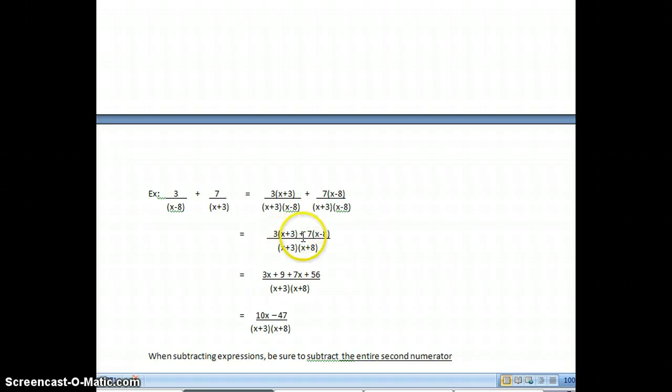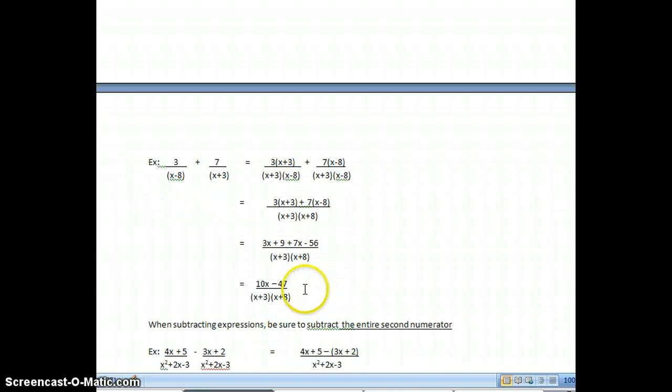And I have 3 times x plus 3 plus 7 times x minus 8. Now I'll distribute: 3 times x is 3x, 3 times 3 is 9, 7 times x is 7x, 7 times minus 8 is minus 56.